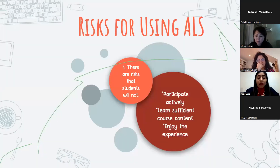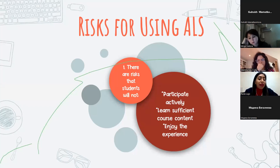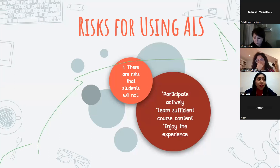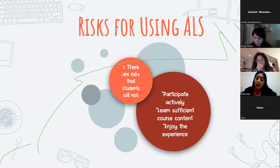As with everything, there are some risks of using active learning activities. The first one is participating in an active way — there are different factors that can be involved, for example family, personal issues, or even just the attitude that students have that day. Then we have learned sufficient course content — we are conscious that in some cases the institutional side asks us to cover all the content. But when using active learning strategies, we don't focus so much on learning content but on learning for life. Then we have enjoyed the experience — not all students like to participate in activities that go beyond their comfort zone or in activities they're already used to. So patience and constant effort should be our main objective, and then it will be easier.